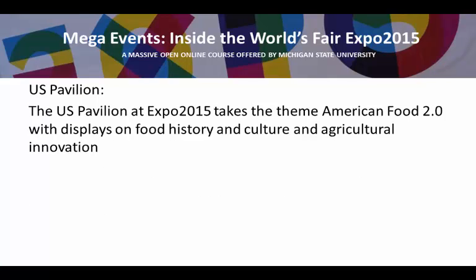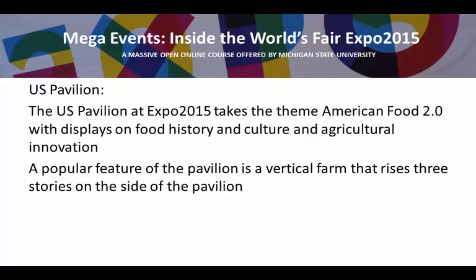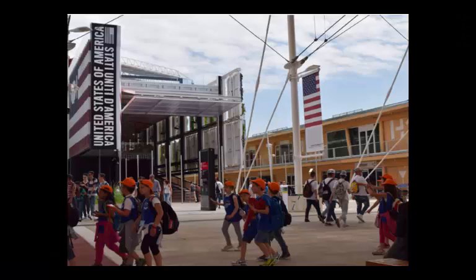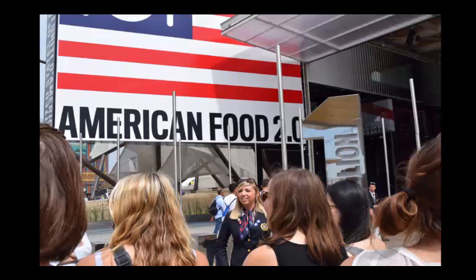The US pavilion at Milan Expo takes the theme of American Food 2.0. The displays focus on food history and culture and agricultural innovation. A popular feature is the vertical farm that forms one wall of the pavilion. Also associated with the US pavilion are food trucks serving regional American food and a restaurant in central Milan on the central square. The pavilion entranceway is right off the Decumanus, and the hosts are all US university students volunteering as interns at the pavilion for part of the summer.